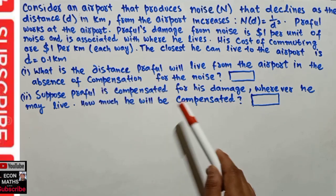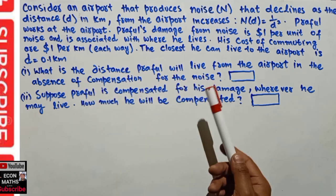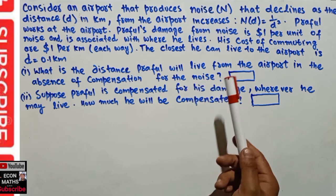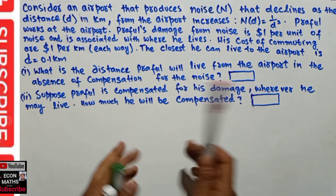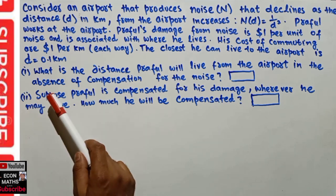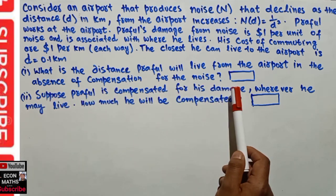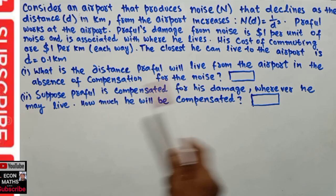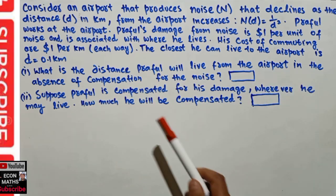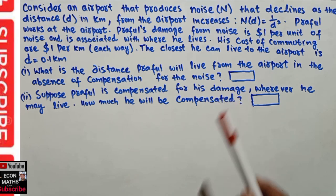We are told to find: first, the distance Profile will live from the airport in the absence of compensation for the noise — if he is not being compensated, what distance will he choose to live? Second, suppose Profile is compensated for his damage wherever he may live — we need to find out how much he will be compensated.